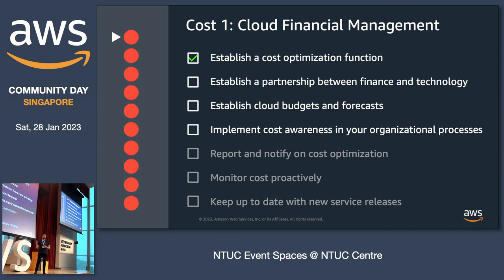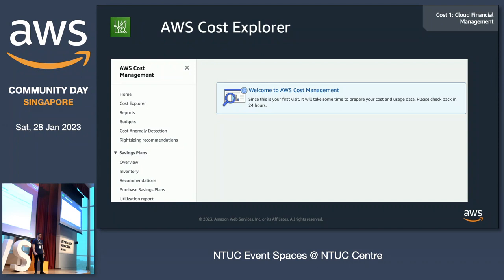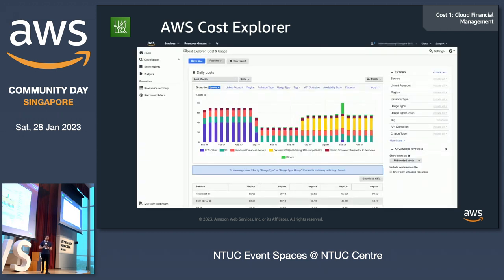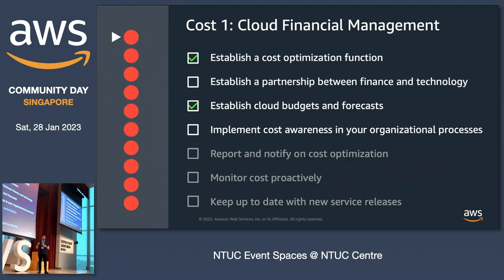That's why I'd like to introduce AWS Cost Explorer — my second favorite cost optimization tool. It's a free-of-charge service that gets enabled automatically when you provision your AWS account, though it still takes 24 hours to start populating costs. Over time, when it starts populating costs, you can slice and dice them based on services, regions, and accounts. You can filter depending on how you'd like to gain more insights into what you have in place.